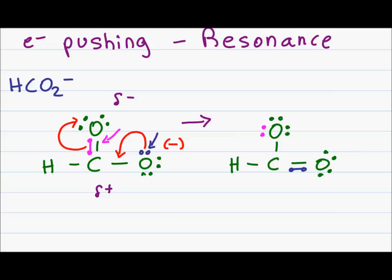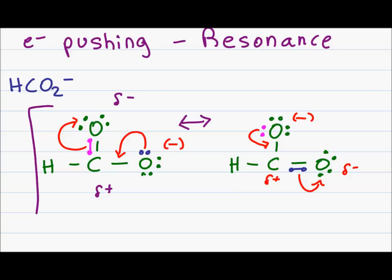I take a quick formal charge to ensure that I haven't gained or lost any electrons in the process. The molecule on the right now has a negative charge near a partial positive carbon which is attached to a partially negative oxygen, and so the cycle continues. I draw a double headed arrow between the two structures and surround them in brackets, showing that these are my two resonance structures for the carboxylate anion.